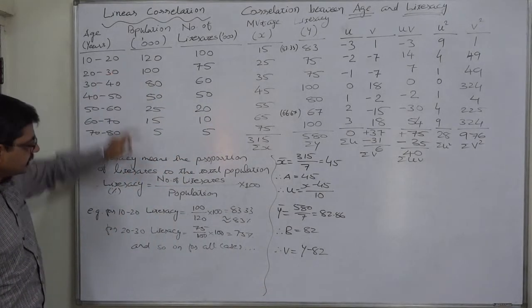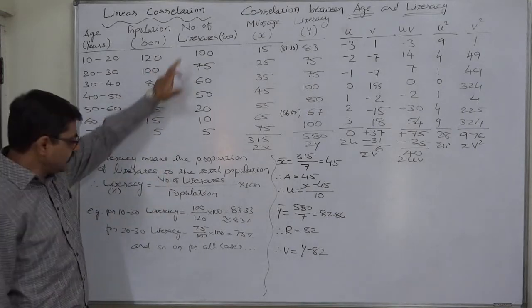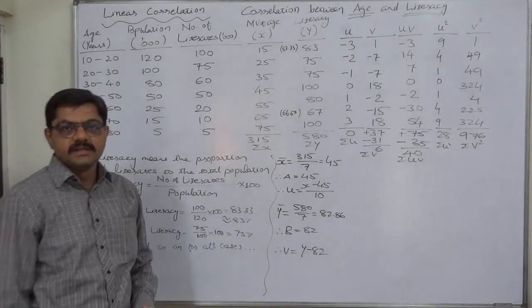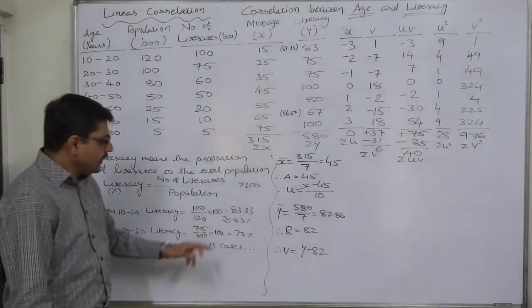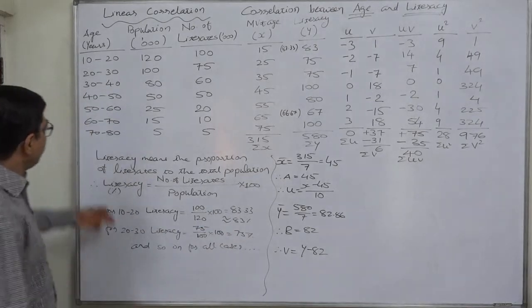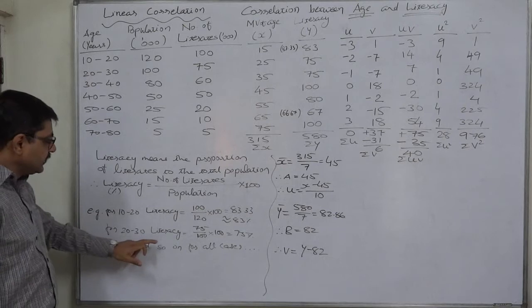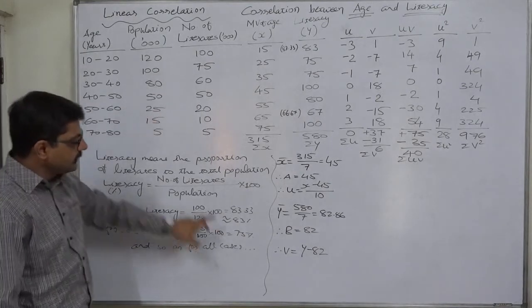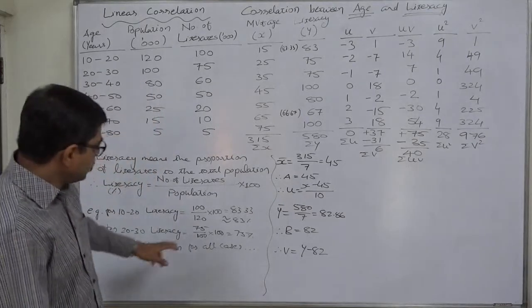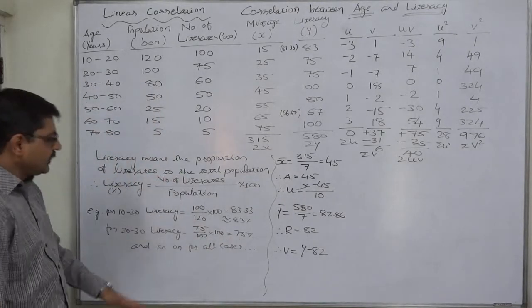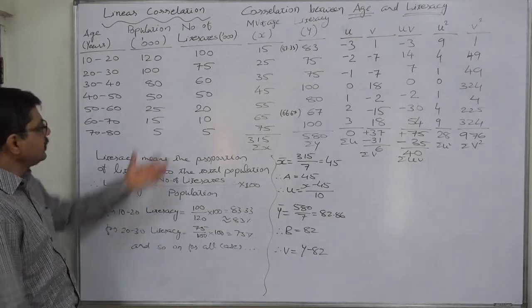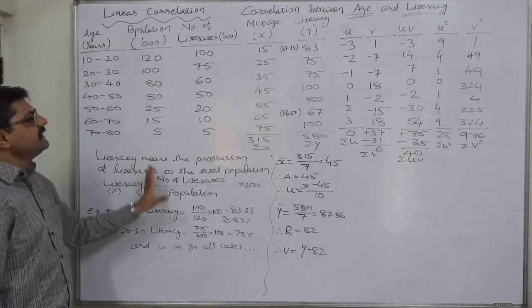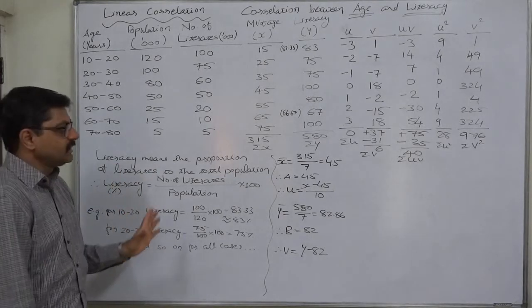The formula is: Literacy (%) = (Number of literate people / Population) × 100. For example, for the age group 10 to 20, if the number of literates is 100 and the population is 120, the percentage comes to 83.33, which we round off to 83%. For the age group 20 to 30, literacy = 75/100 × 100 = 75%.